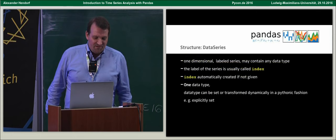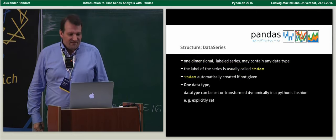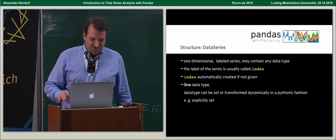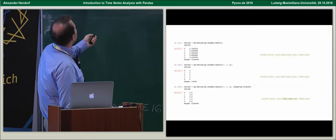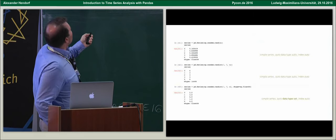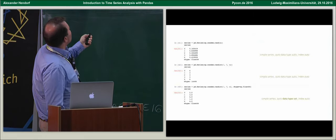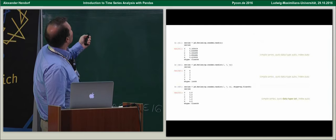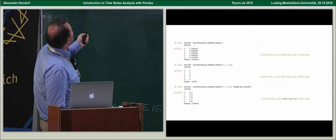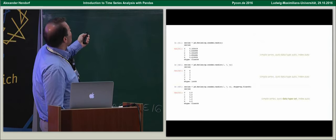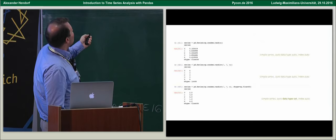Let's look at some series examples. Here we're creating a series with the pd.Series() method, passing in some random numbers using the numpy random function. The output shows the automatically created index and the data type — pandas guessed float64. We can also create a series of integers, or pass in integers but tell pandas to store them as float.